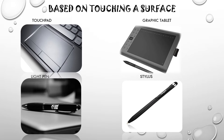We also have the light pen, a computer input device in the form of a light-sensitive wand used in conjunction with the computer's CRT display. It allows the user to point to displayed objects or draw on the screen, similar to a touch screen but with greater positional accuracy. Then we have the stylus, a small pen-shaped instrument used to input commands to a computer screen, mobile phone, or graphics tablet.